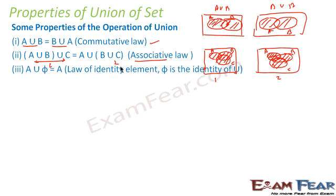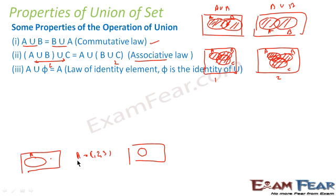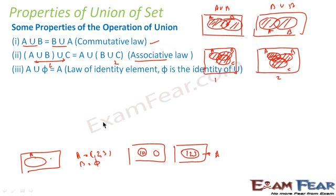Similarly, A union ∅ (empty set) equals A. This is called the law of identity. For example, let set A = {1, 2, 3} and set B = ∅. When you merge these two, you get only {1, 2, 3} because B has no elements. So when you do a union of any set with the empty set, you get the set itself — this is the law of identity.